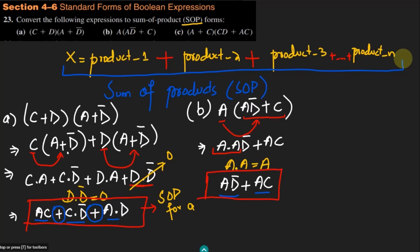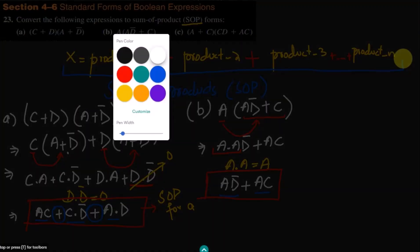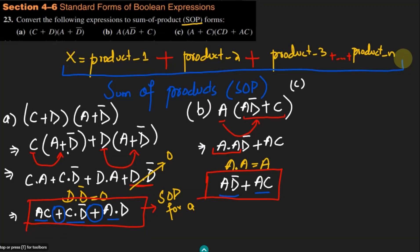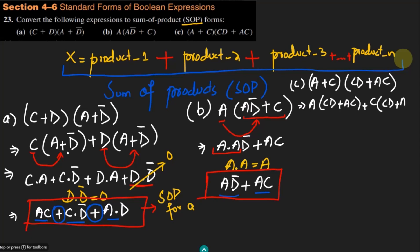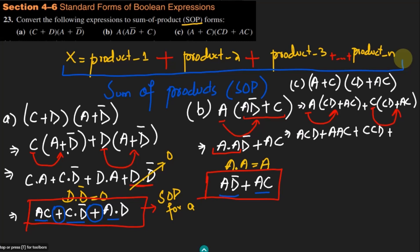Now for the last part, part (c), we have (a + c)(cd + ac). Using the same distributive approach, we can write this as a·cd plus a·ac plus c·cd plus c·ac.